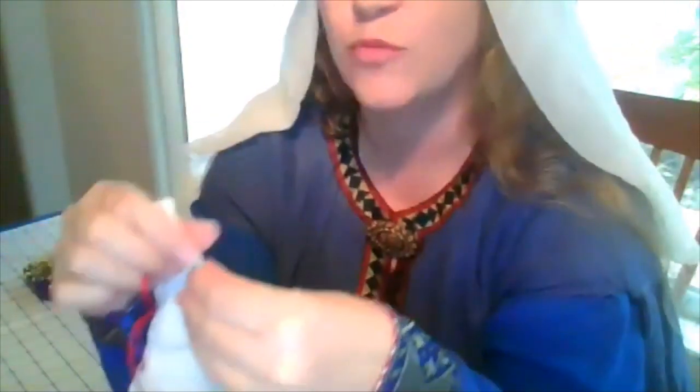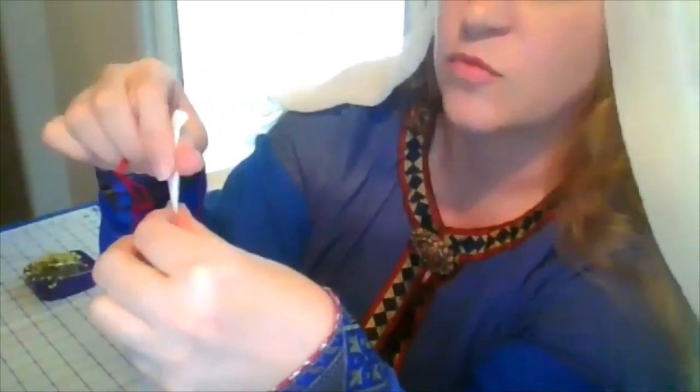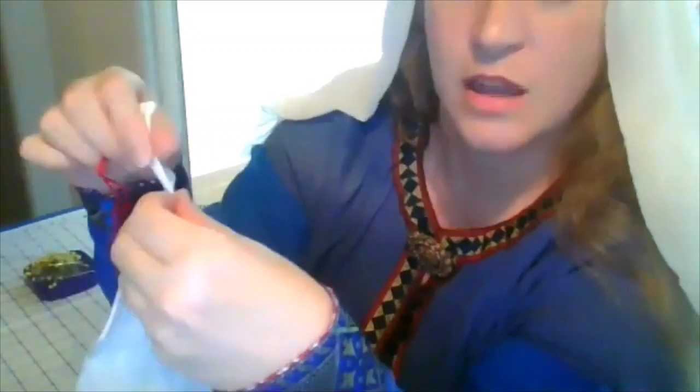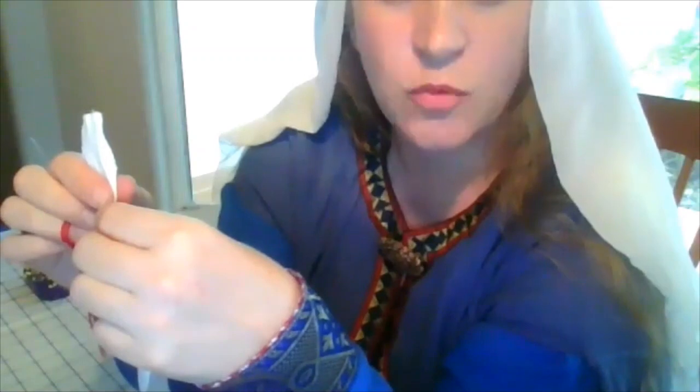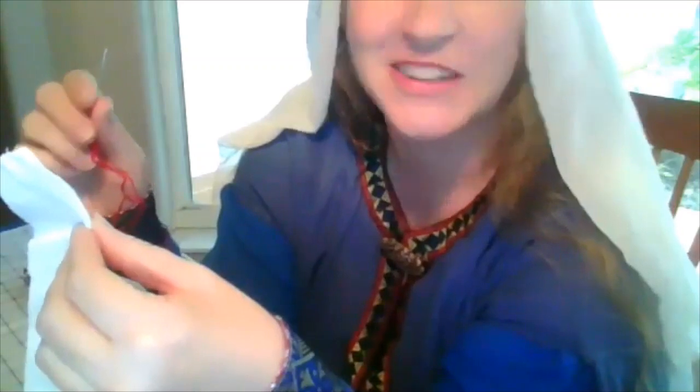So the process gets started by taking the edge of the fabric which you've cut to something approximating a pleasant curve. And you roll the edge. You just get it between finger and thumb and roll it. And you could start this anywhere, but I found that it's easiest to work if I start near one edge of a straight of grain, like a selvedge. And then I do the curve that's at one end of it and continue around to the other straight of grain.